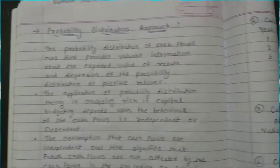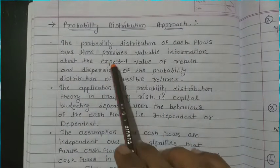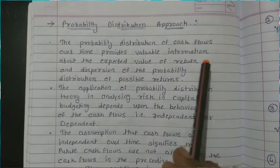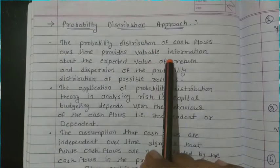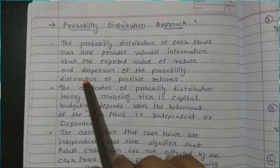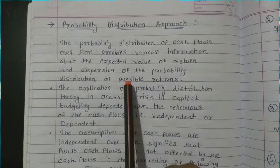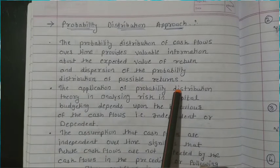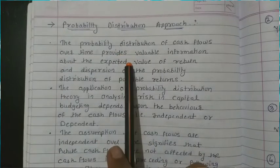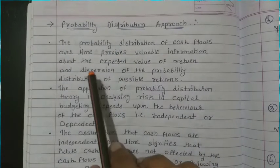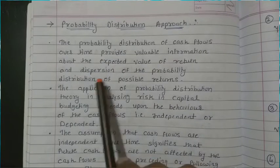The probability distribution of the cash flow over time provides valuable information about the expected value of return and the dispersion of the probability distribution of the possible returns. This method provides valuable information about the expected value of return.